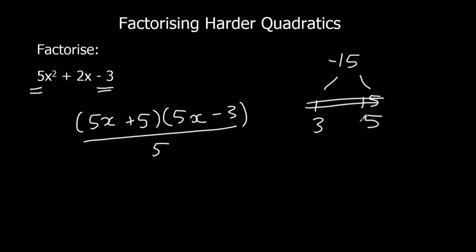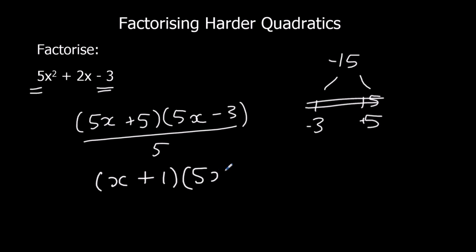We need to make a plus 2, so we're going to do 5 take away 3: plus 5 and minus 3. They multiply to give you minus 15. Now that's factorised — we just need to simplify it. We're going to divide this bracket by 5 because both numbers are in the 5 times table. So 5x divided by 5 is x, and 5 divided by 5 is 1. The second bracket stays the same. That's the final answer — again, you can expand to check.